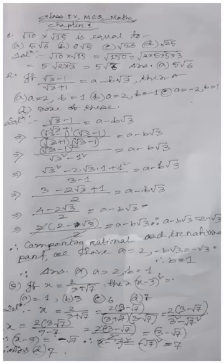Now factorize 150. When you factorize 150, you get 2 × 5 × 5 × 3.